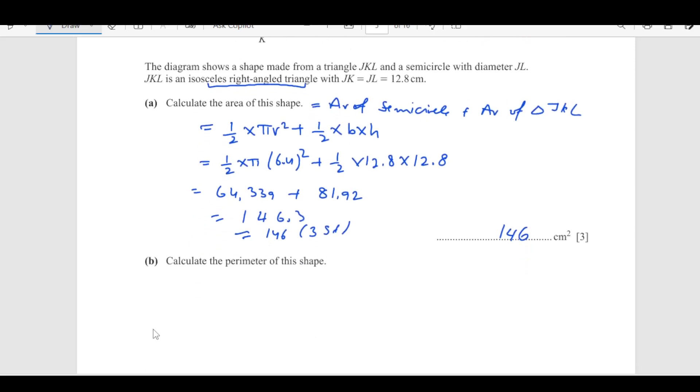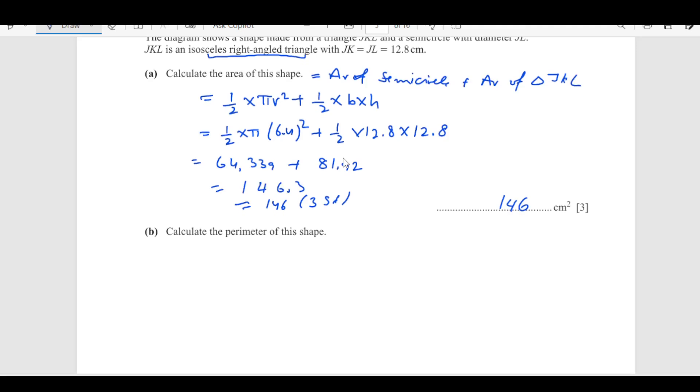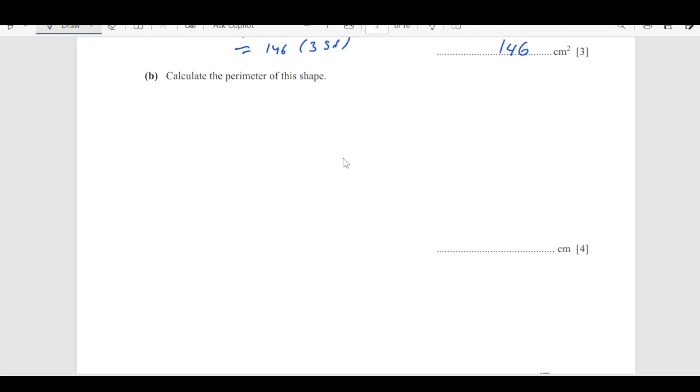Now, let's calculate the perimeter of the shape. For the perimeter of the shape, we need this one plus this length plus this. That is all lengths around the shape. So, this is the semicircle. We can find out the circumference by using half of 2 pi r, which is pi r. Then we need this JK and KL. We don't have KL but as this is a right angle triangle, we can use Pythagoras theorem for that. First of all, we will find out KL. So, KL is going to be square root of 12.8 squared plus 12.8 squared. This equals to square root of 327.68. That gives us KL as equals to 18.1 centimeters.